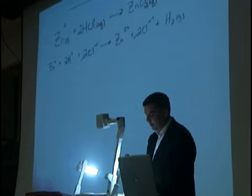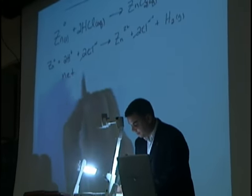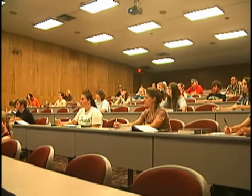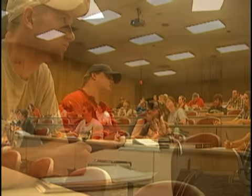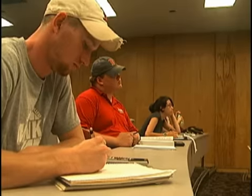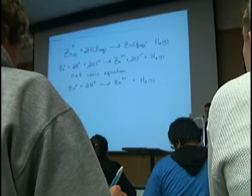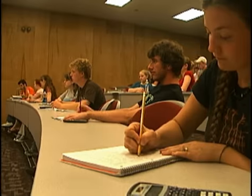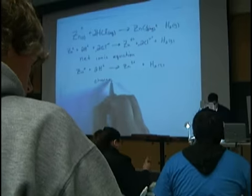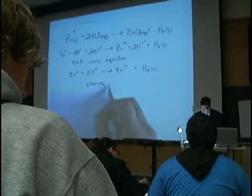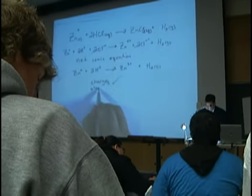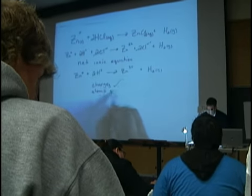So now we can write a net ionic equation. One zinc, one zinc. What about charges? Two positive, two positive. So both the charges balance, and the atoms balance.